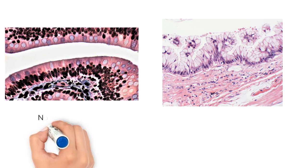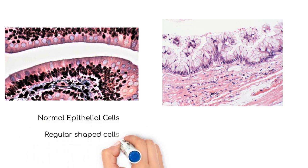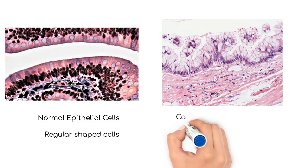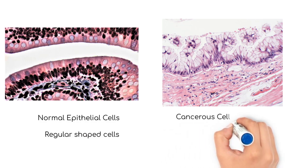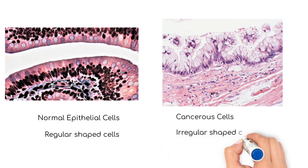Here is a comparison of two epithelial tissues. The normal tissue on the left contains cells with similar shapes that produce a regular border. The cancerous tissue on the right contains undifferentiated cells that produce a very irregular border.